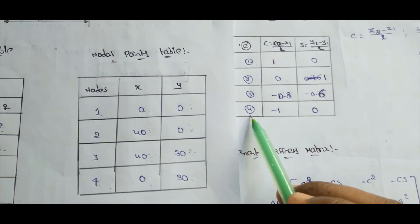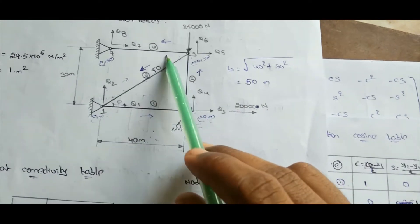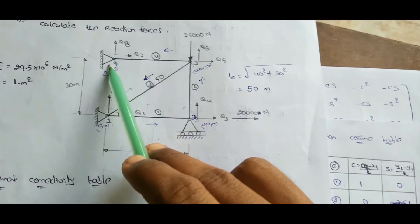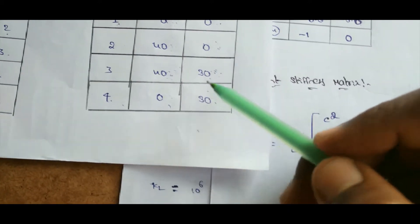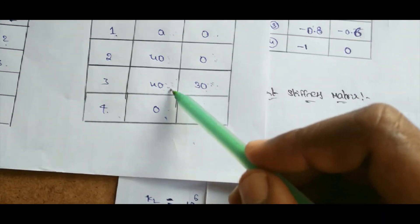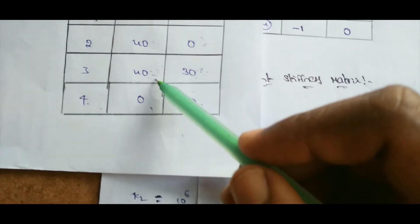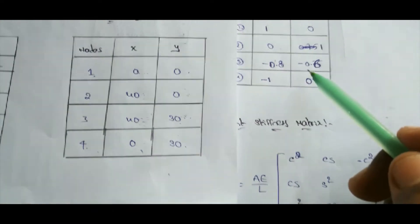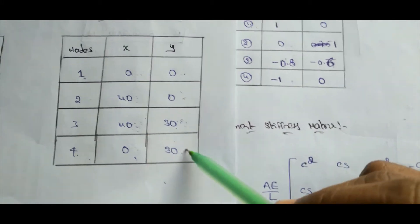For element 4, having nodes 3 and 4: x2 − x1 = 0 − 40 = −40, divided by the length of element 4 which is 40, so C = −40/40 = −1. For S: y2 − y1 = 30 − 30 = 0, so S = 0. Therefore C = −1, S = 0 for element 4.